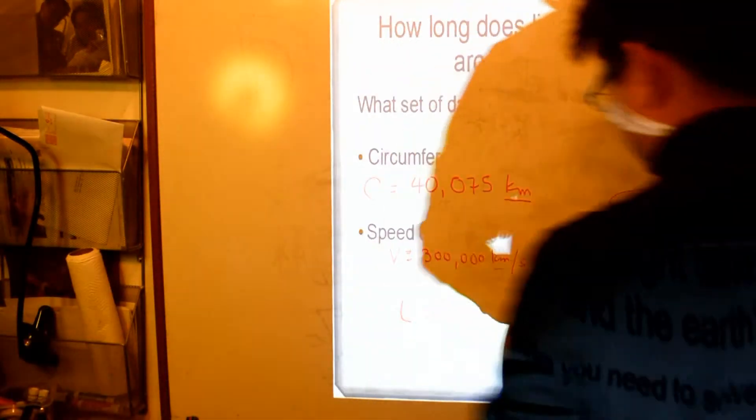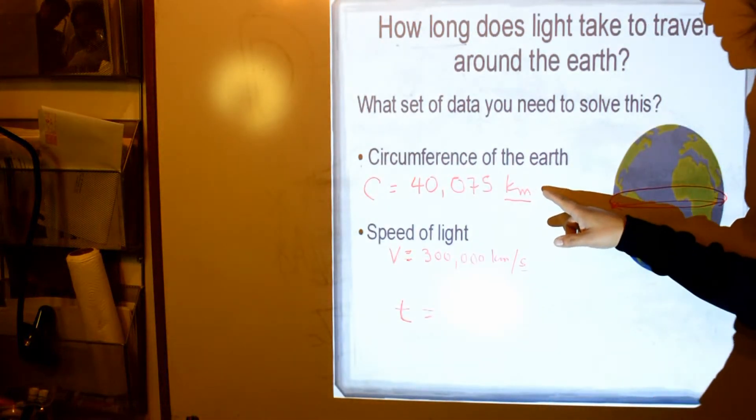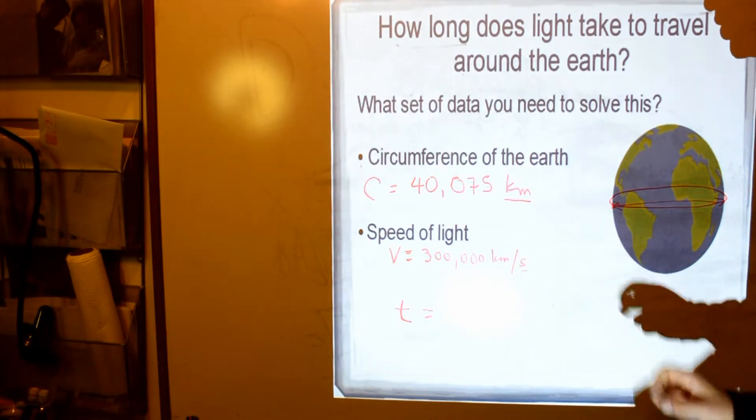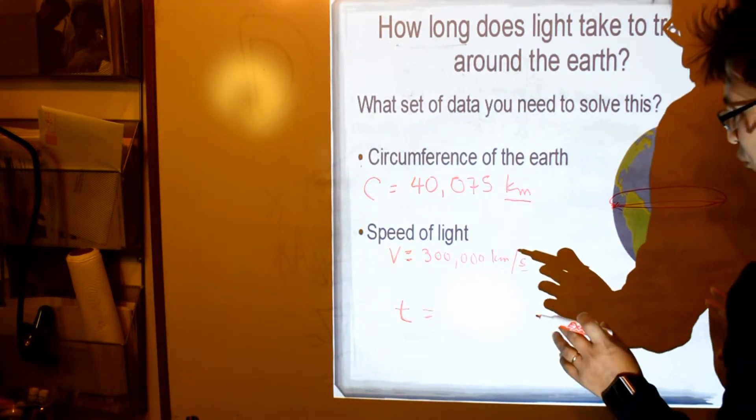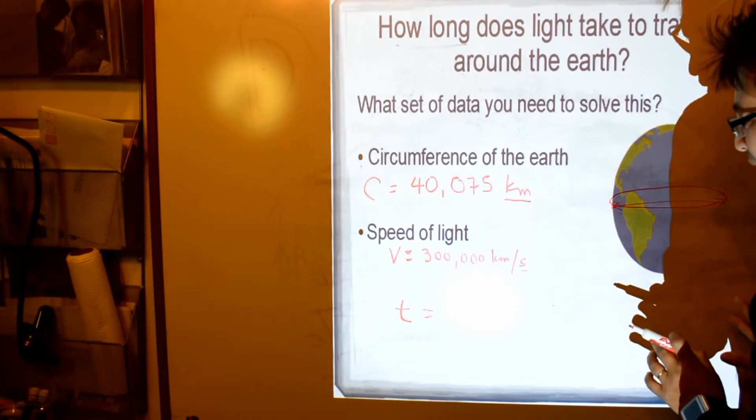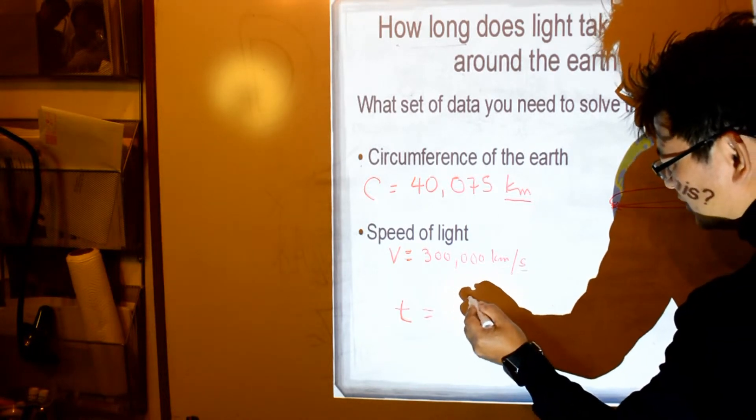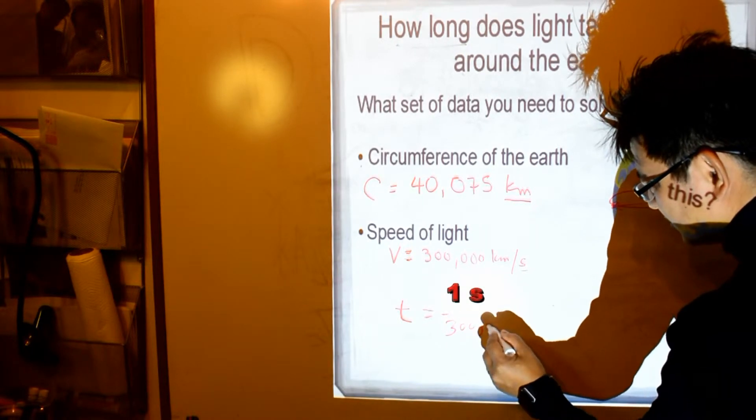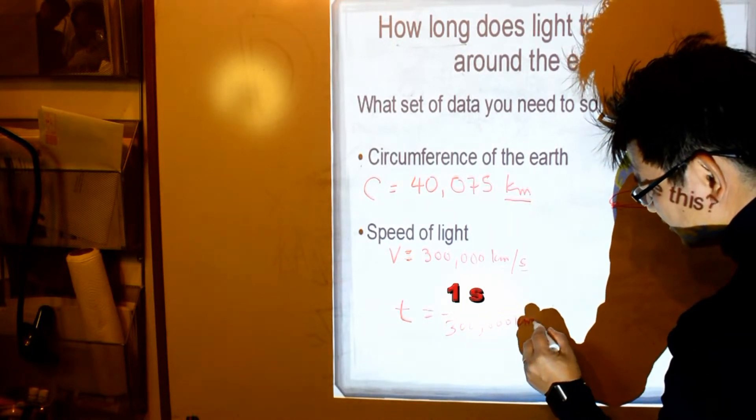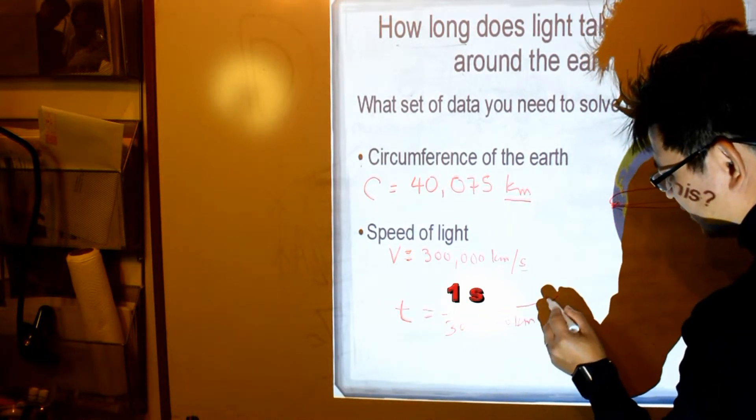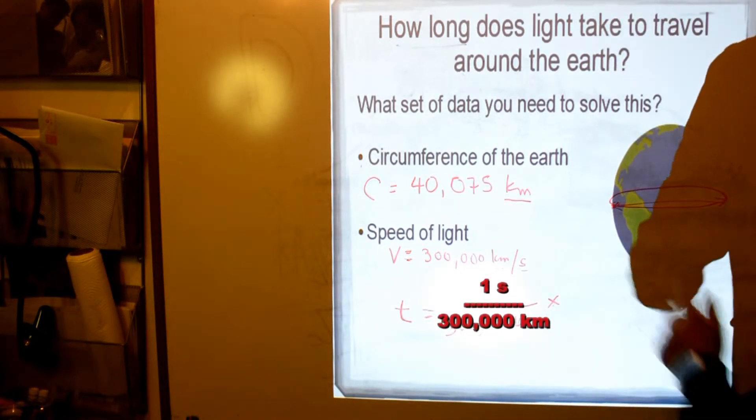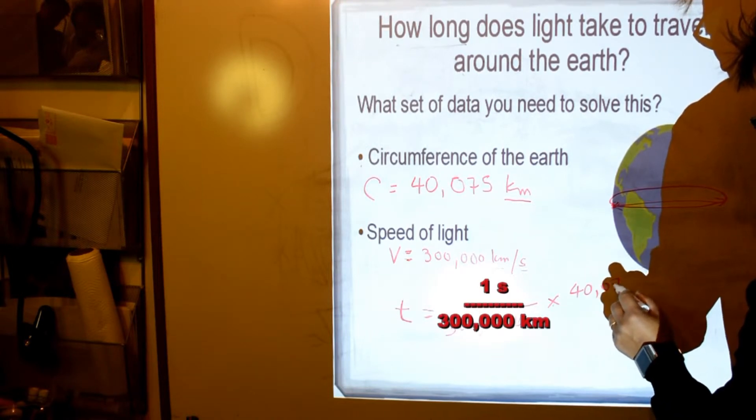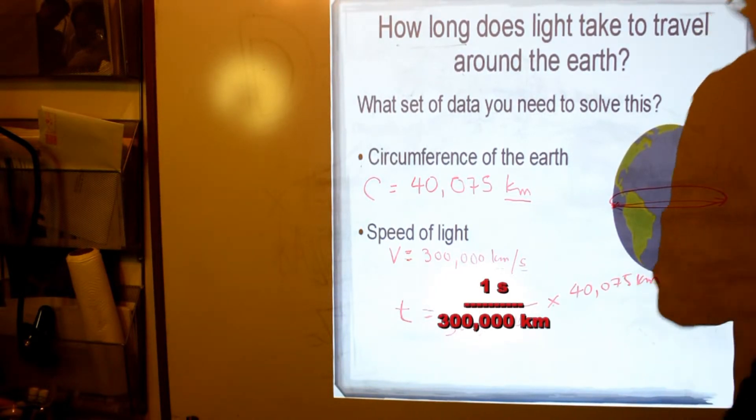So to do that, let's look at the speed first. It's kilometers per second. What if, instead of writing 300,000 kilometers per second, we put for every one second gives us about 300,000 kilometers. Right? And then we're going to multiply by 40,075 kilometers.